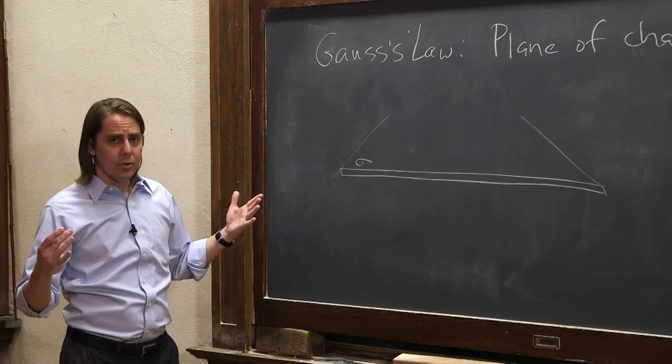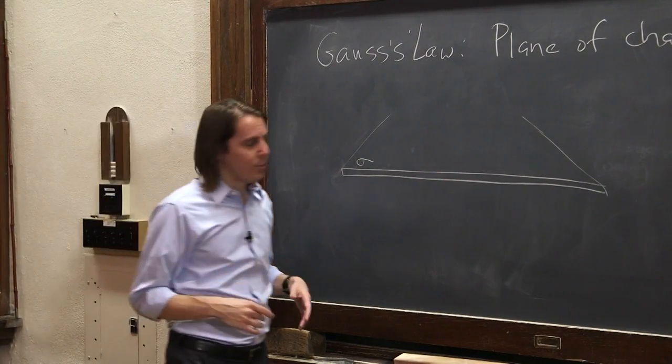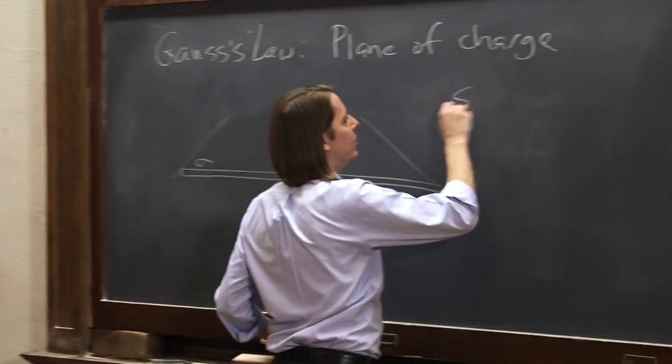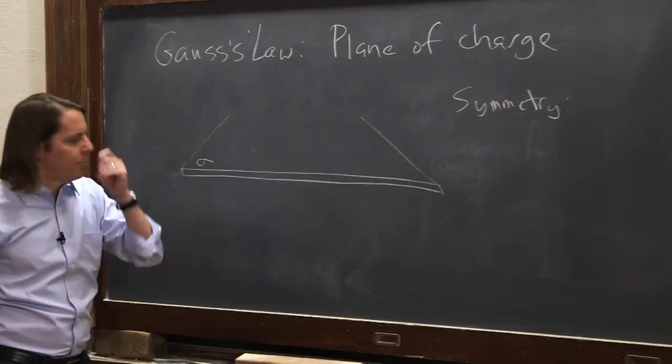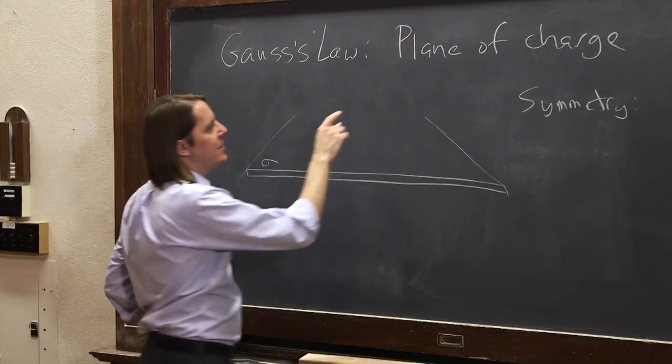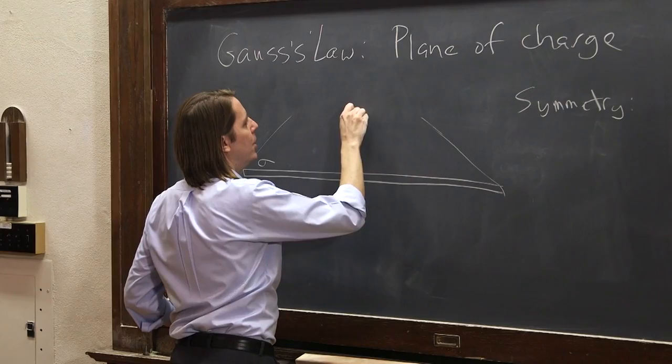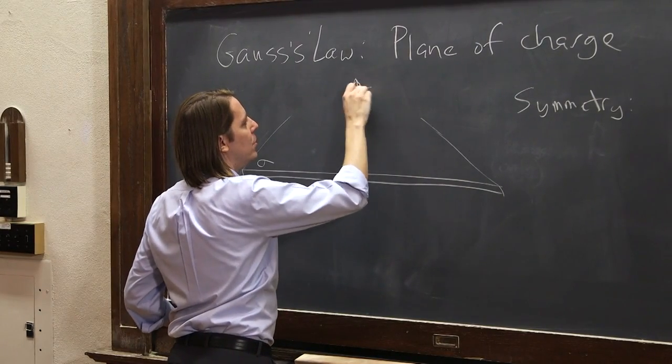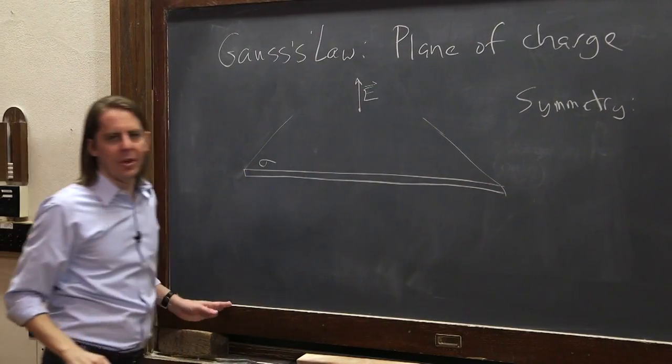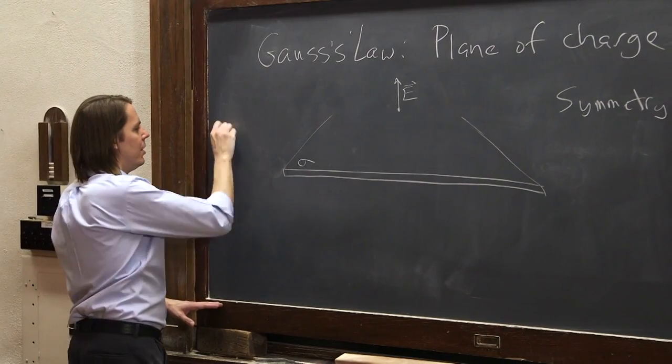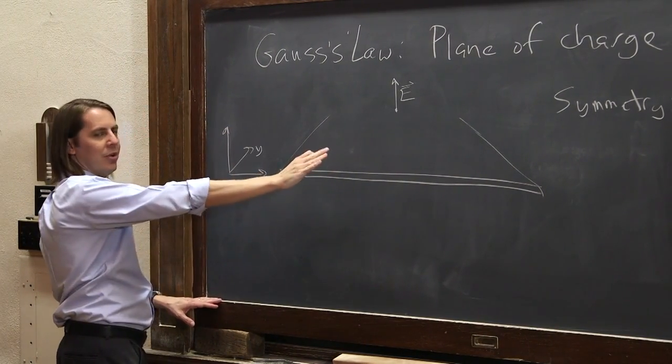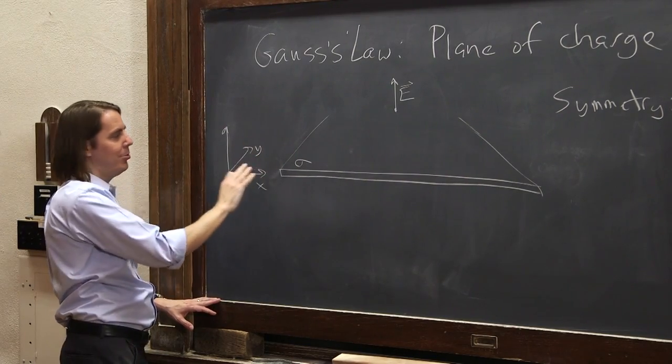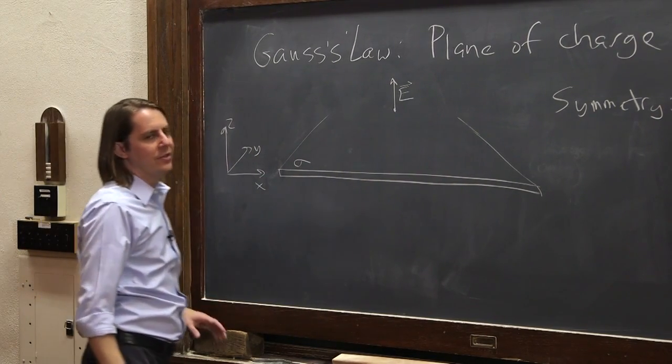And in a Gauss's Law problem, the first thing I always ask is, what does the symmetry tell us? So in this case, when you have a plane of charge, the symmetry is actually telling you that the E field points normal to the plane. So if I were to put a coordinate system like this, where I have X and Y like that, the plane of charge is in the XY plane, then the E field is going to point in Z.